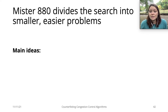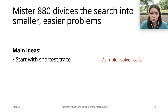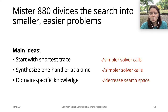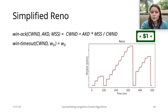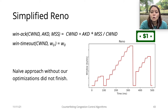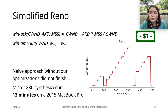To summarize, to make the CCA synthesis problem more tractable, we implemented some improvements in Mr. 880. We start our synthesis process considering only the shortest trace, and we synthesize one handler at a time. Together, these two ideas contribute to simpler solver calls. Besides, we use domain-specific knowledge to remove handlers from the search space, making fewer calls to the solver. We tested our approach on a few simple CCAs, including RENO, our one-dollar bill. The naive synthesis method timed out after one day. With our optimizations, however, Mr. 880 was able to synthesize simplified RENO in 13 minutes on a MacBook.